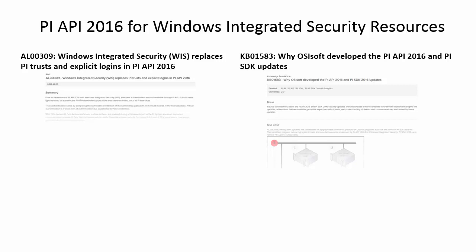For additional information, including system requirements, please refer to the on-screen alert and knowledge base article. Also, please note PI API for Windows Integrated Security requires PI Server 3.4.380 or later. Let's start by looking at the current setup of our interface node, PIINT 01.